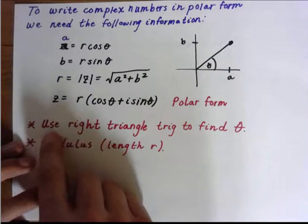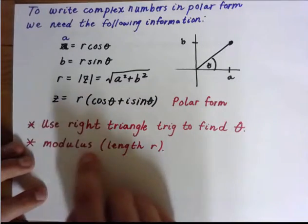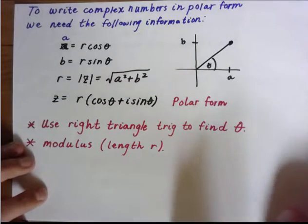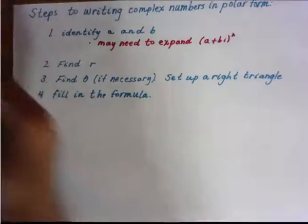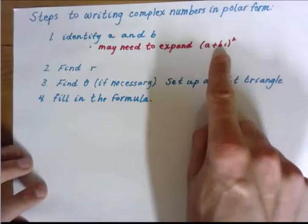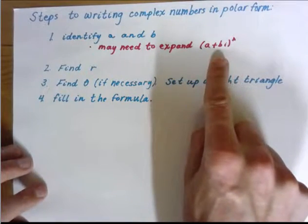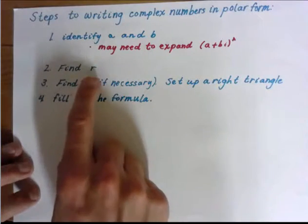To find theta, most of the time we're going to use right triangle trig. And just a side note here, so for the modulus R. So when I do these types of problems, I like to do the following things. I identify my A and B. Sometimes I may need to expand depending on what type of complex number I'm given. I like to find R.